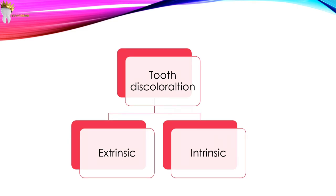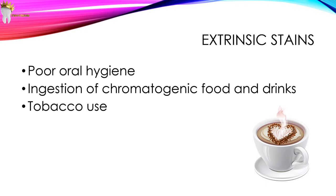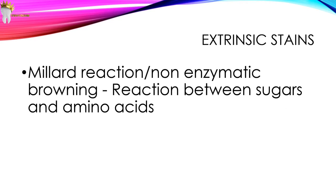Before we begin with bleaching, the causes of tooth staining must be understood because some stains are more responsive to the process than others. Tooth discoloration may be extrinsic or intrinsic. Extrinsic stains are located on the surface of the tooth and are most easily removed by external cleaning like scaling. These may be due to poor oral hygiene, ingestion of chromatogenic foods and drinks like tea and coffee, and tobacco use. Stains are localized in the pellicle and are generated from a reaction between sugars and amino acids, called the Maillard reaction or non-enzymatic browning reaction.